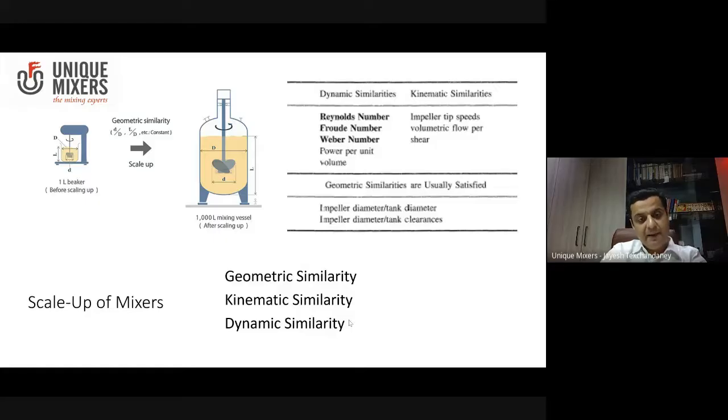Now when you scale up, you want to make sure that the ratios of your say diameters, so diameter of the smaller equipment to the diameter of the larger equipment, you maintain a specific ratio. Same way the length of the equipment, the diameter of the agitator to the diameter of the vessel, that is maintained. The length of the vessel to the diameter of the vessel is maintained. So when you maintain these ratios constant, you are basically maintaining a geometric similarity.